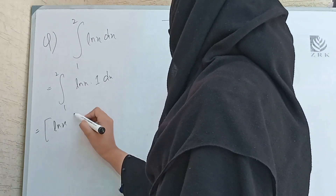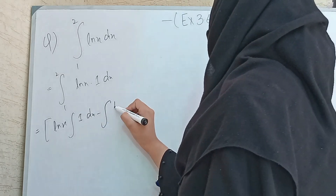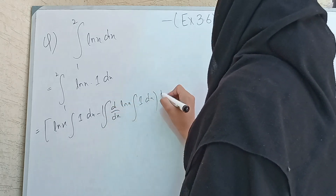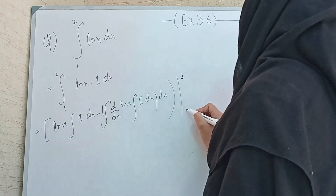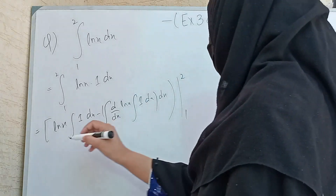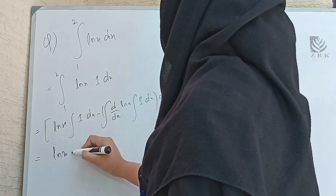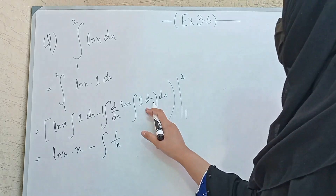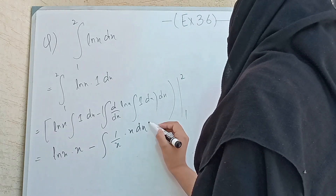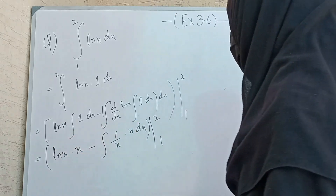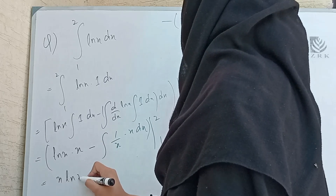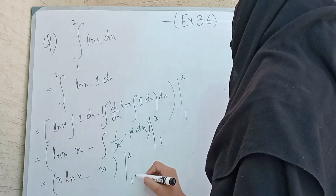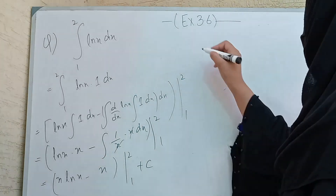Using integration by parts: first function as is times integration of second, minus integration of [derivative of first times integration of second] dx. So: ln(x) · x − ∫(1/x · x) dx = x·ln(x) − ∫1 dx = x·ln(x) − x, evaluated from 1 to 2.